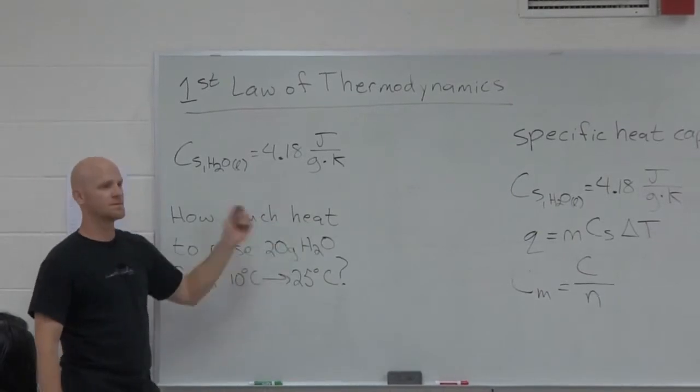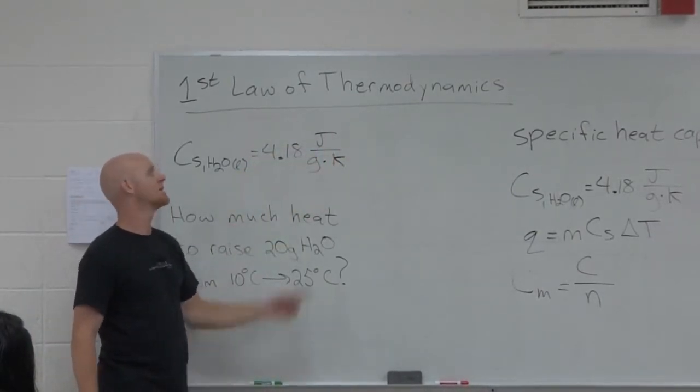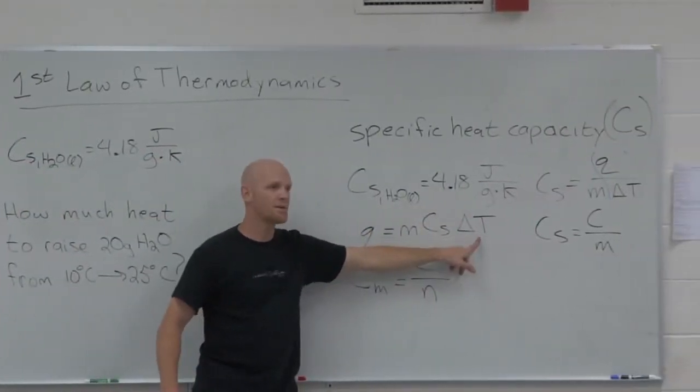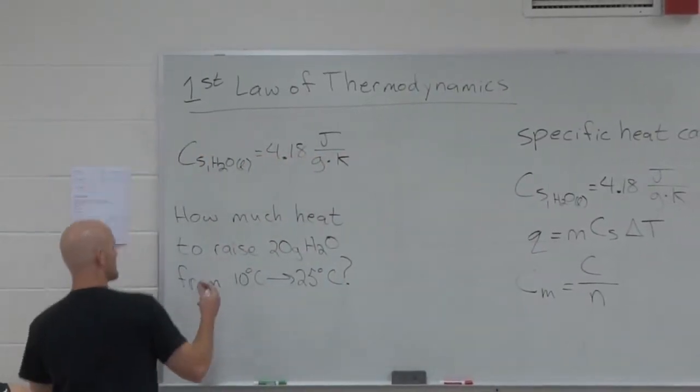Notice your dimensional analysis. What's heat going to have units of? Joules. So what do I need to multiply this by to get joules out? Grams and kelvin. So multiply by the grams, multiply by the kelvin. So either way, end of the day, you just got to plug and chug some of this stuff.